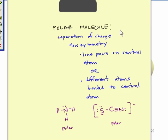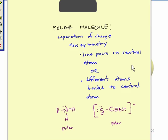So when we're looking at polar molecules, what we're looking at is the separation of charge. How we can tell if we have a polar molecule or not is we're looking for polar molecules of low symmetry. What do we mean by low symmetry? Either lone pairs on the central atom, or different atoms bonded to the central atom — and by different atoms, I mean atoms of different elements.